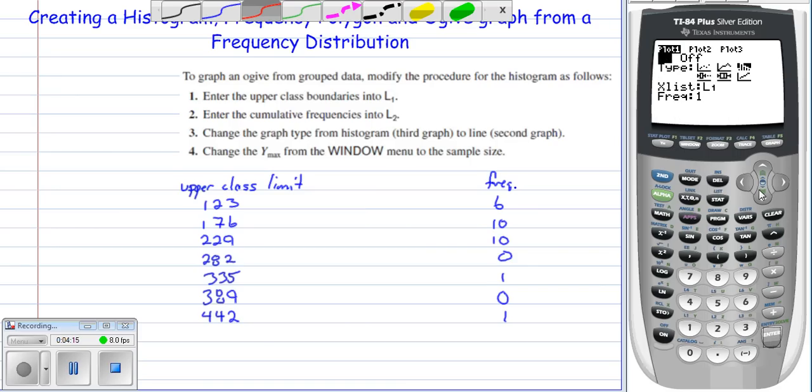Inside of plot number 1, what they told us to do is to change this from histogram type 3 to the second option. You'll notice when we do that, it gives us an option for L1 and L2. This is more like a stat plot in some ways; we're going to draw a line connecting them.